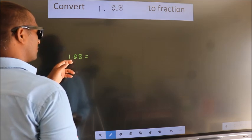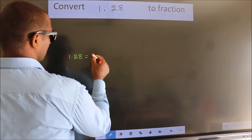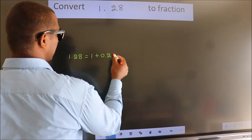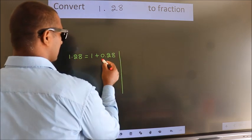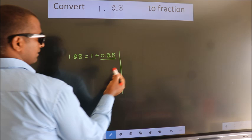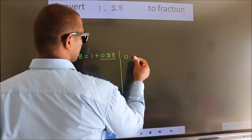First we should break this into 1 plus 0.28. Next, convert this decimal to the fraction here: 0.28.